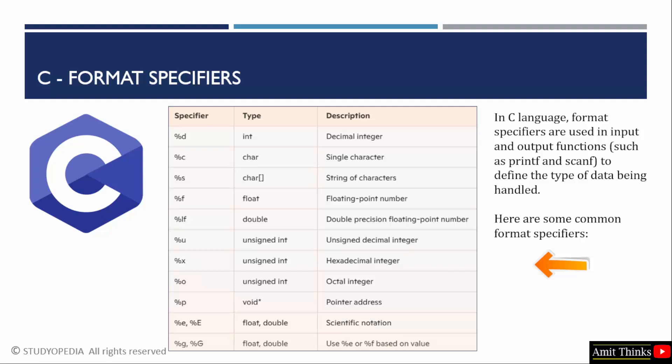For float, we use %f. Float is a floating point number. Double is having higher precision. For that, we use %lf. Similarly, we use other format specifiers.